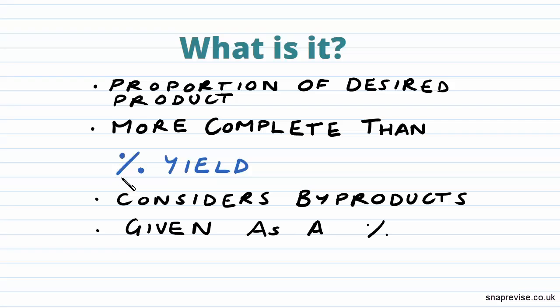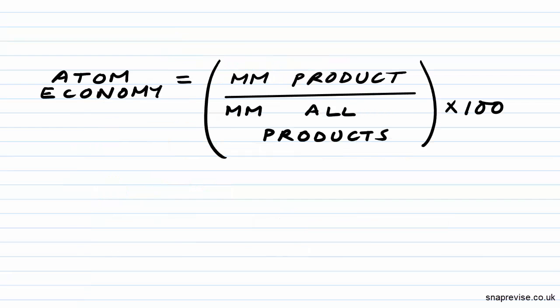than percentage yield, which we looked at in our previous video. It considers the byproducts that are made as well as the product, and it is given as a percentage. So what calculation do we use to work out atom economy? Atom economy is equal to molar mass of products—MM standing for molar mass—the molar mass of